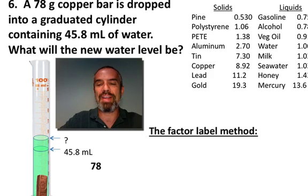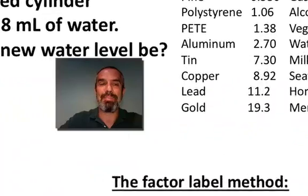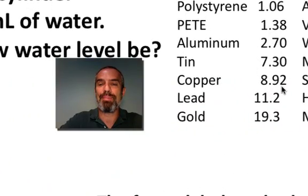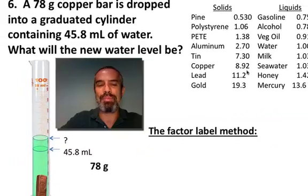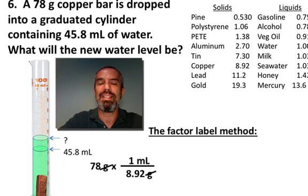Again, sticking just with the factor label method, 78 grams. Two significant figures is all we got here. Let's see, it's copper. We go over here to copper, 8.92 grams per milliliter. Think about it. We want to have that 8.92 grams on bottom, one milliliter on top, so the grams will cancel. Now we're in milliliters, and we have our answer.